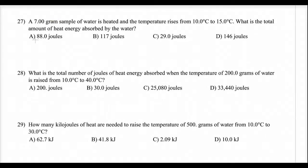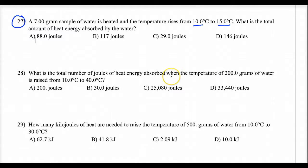Number 27 is the first of these mathematical questions, and we have to first identify what type of question we have. A 7-gram sample of water is heated and its temperature rises from 10 degrees to 15 degrees Celsius. What is the total amount of energy absorbed by the water? In this case, we're going to understand that we need the Joule equation — the heat equation used in this course. And if you forget, you should know that your reference table has one.